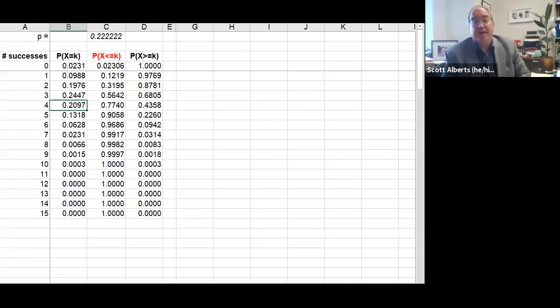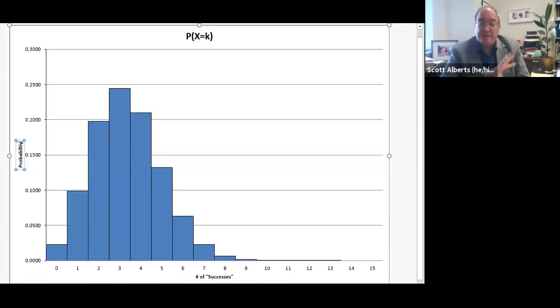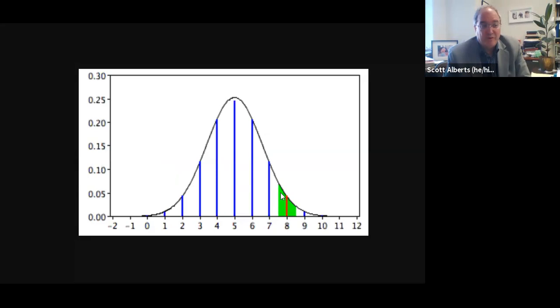This is the second part of chapter 7.5, the normal approximation of the binomial. We set up the problem before with the idea that calculating binomials is cool, but especially when we have a lot of them to do and the calculations are tricky, we can approximate these rectangles with this normal curve and try to get an estimate of how many successes we would expect to get and what the probability of those successes are.